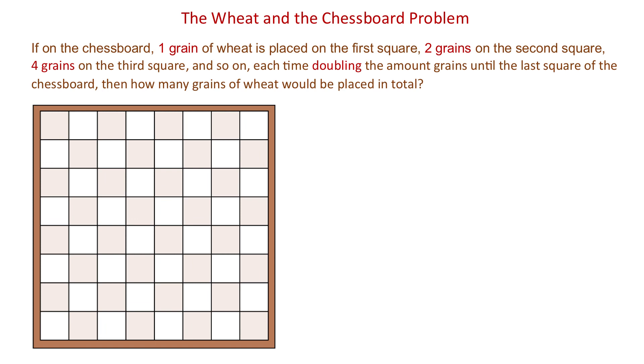The peasant told the king that he wanted one grain on the first square, two grains on the second square, four grains on the third square, and so on, each time doubling the amount of grains until the last square of the chessboard.